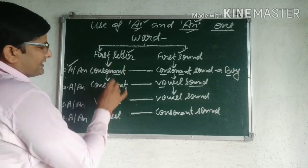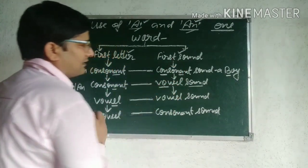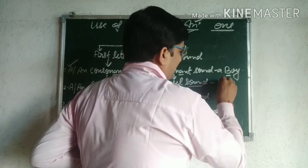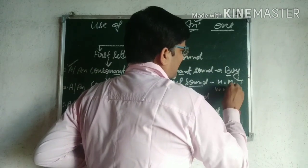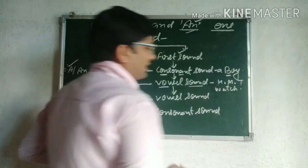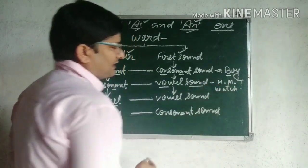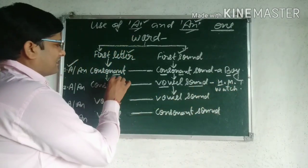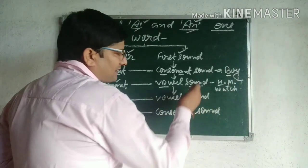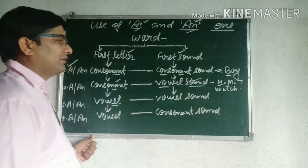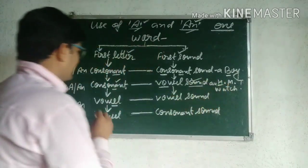Case 2: First letter consonant, but first sound vowel. Example — 'HMT watch': यहाँ H आपका consonant letter है, but अगर हम sound की बात करते हैं तो यह vowel sound है. First sound vowel होने की वजह से 'HMT watch' के पहले An use करना होगा.